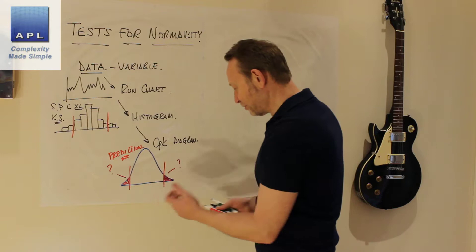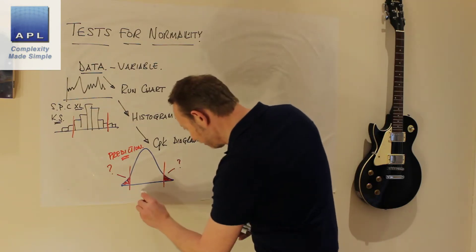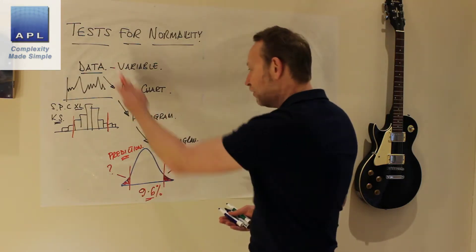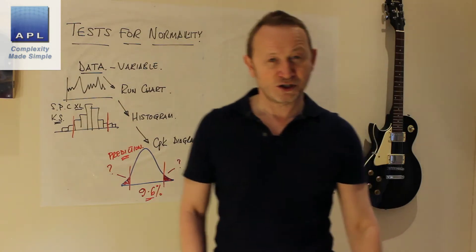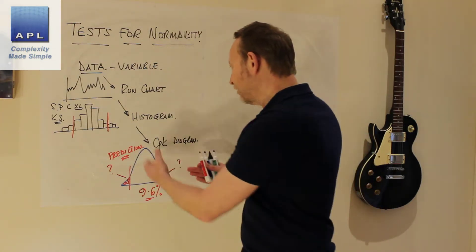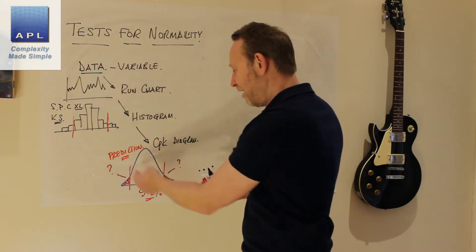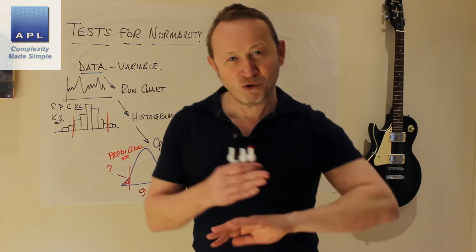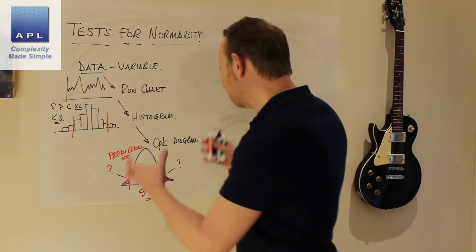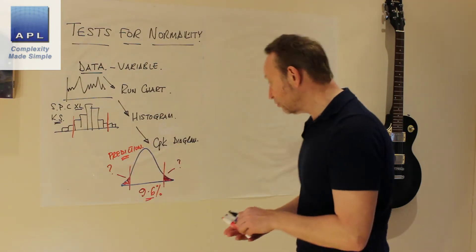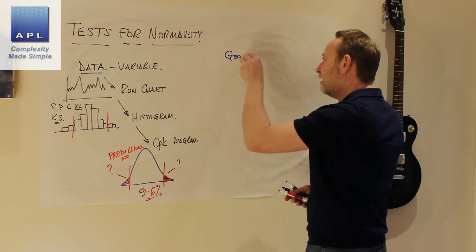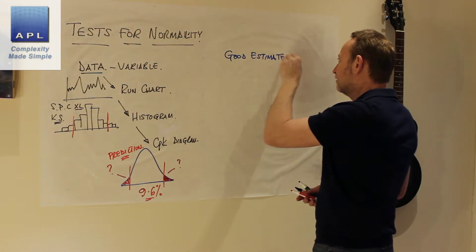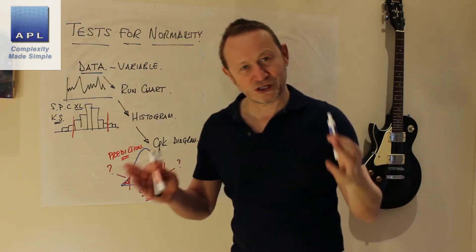Really, that's all the normality test is for. Because all you're trying to do is to say, well, let's say this thing predicts a 9.6% defect rate — if I switch this process on, I'm going to get a 9.6% defect rate. The reason why you just want to check for normality is to say, is this a good estimate? All of the data you look at in your processes, they are estimates. And you should be constantly asking this question: have I got a good estimate?